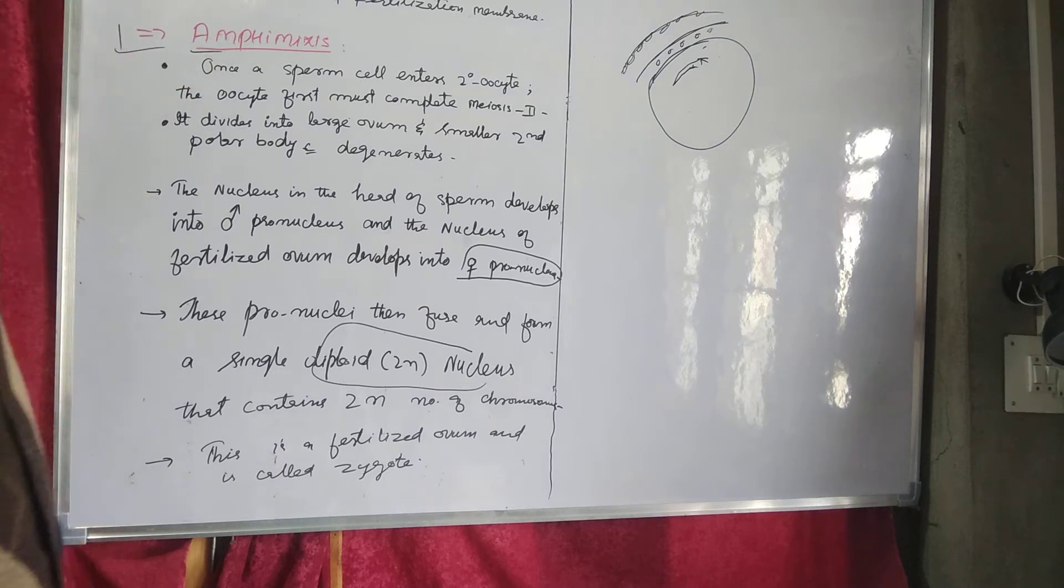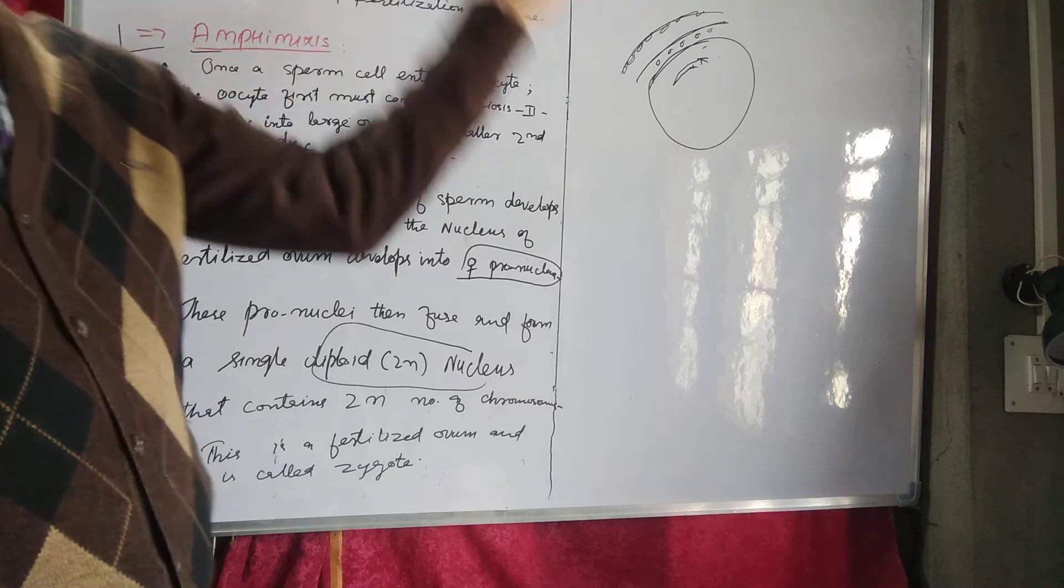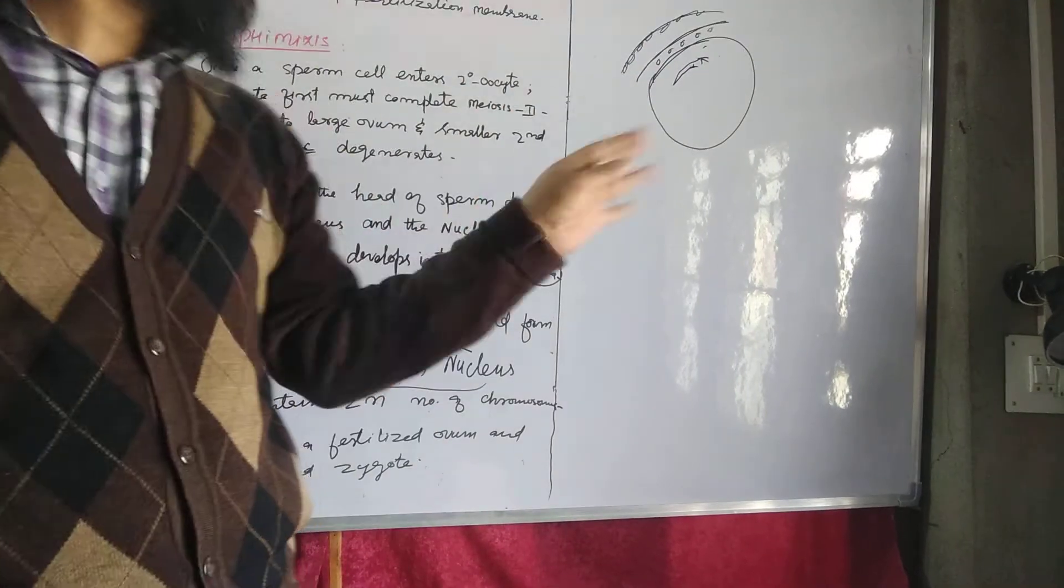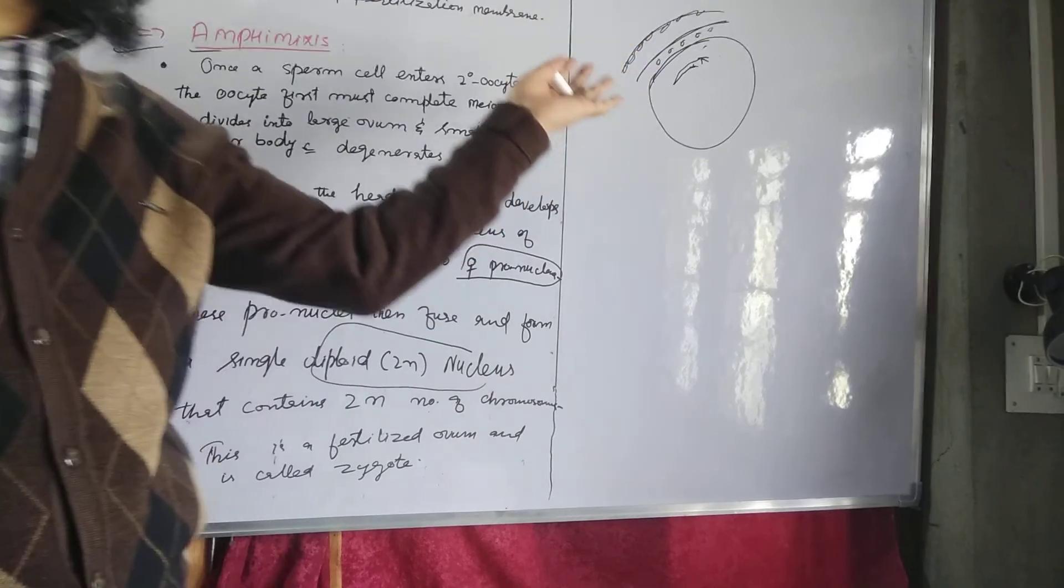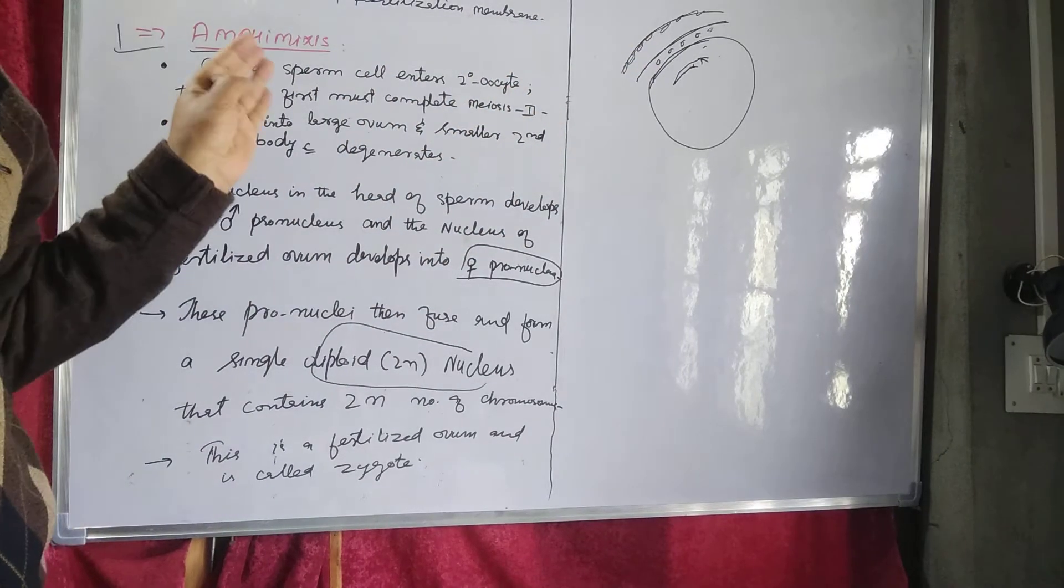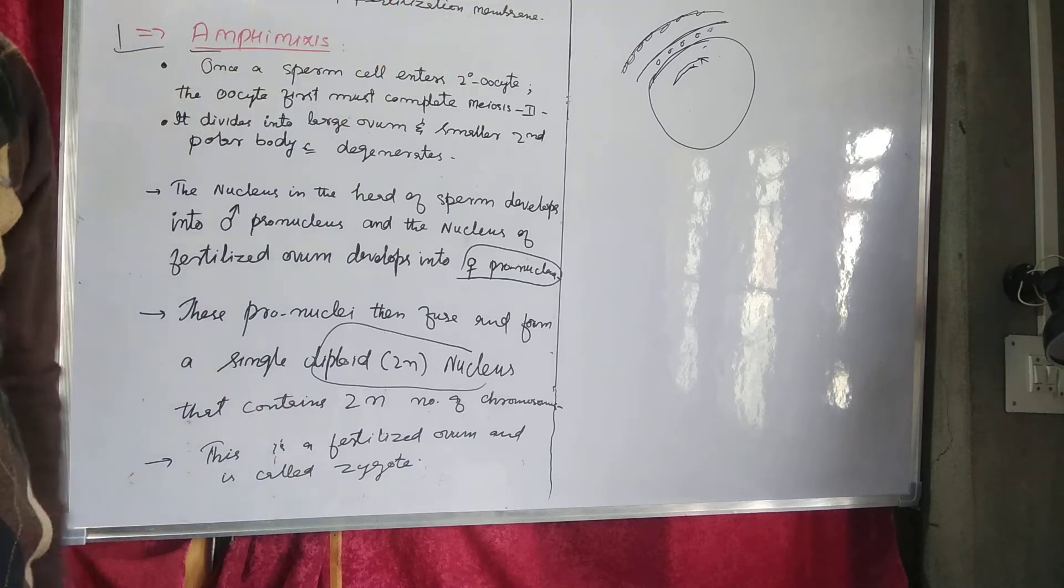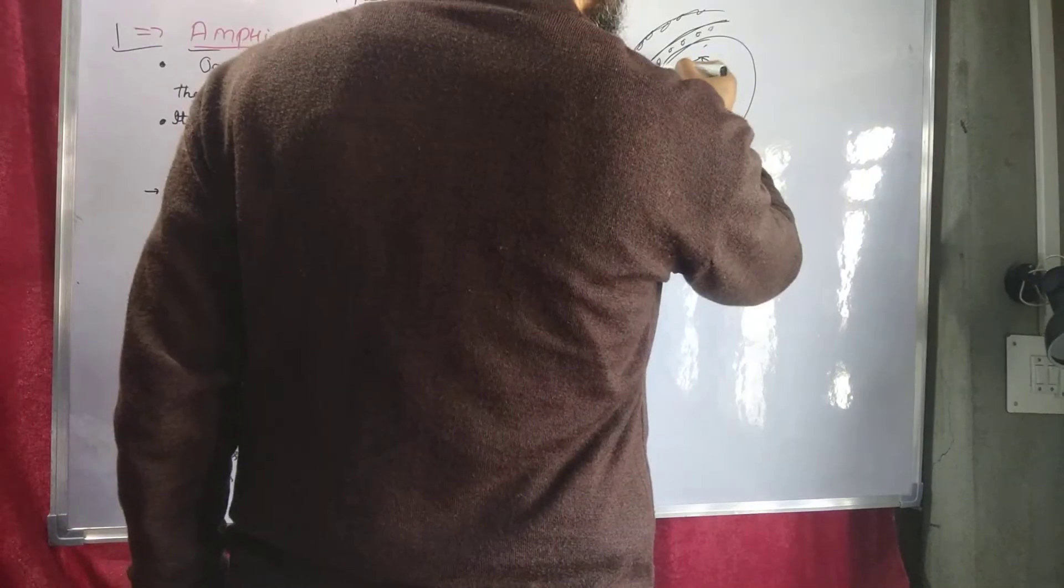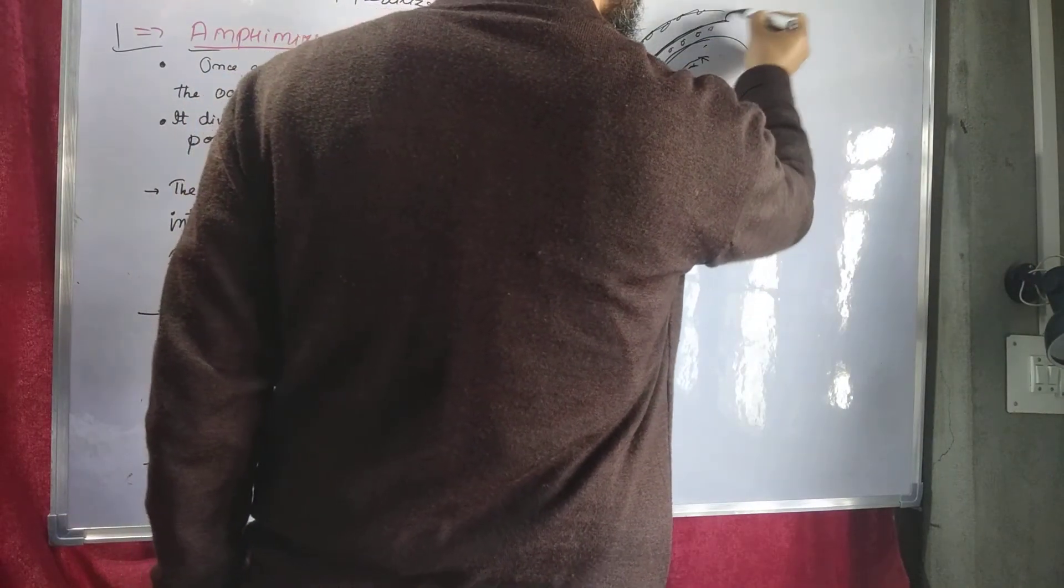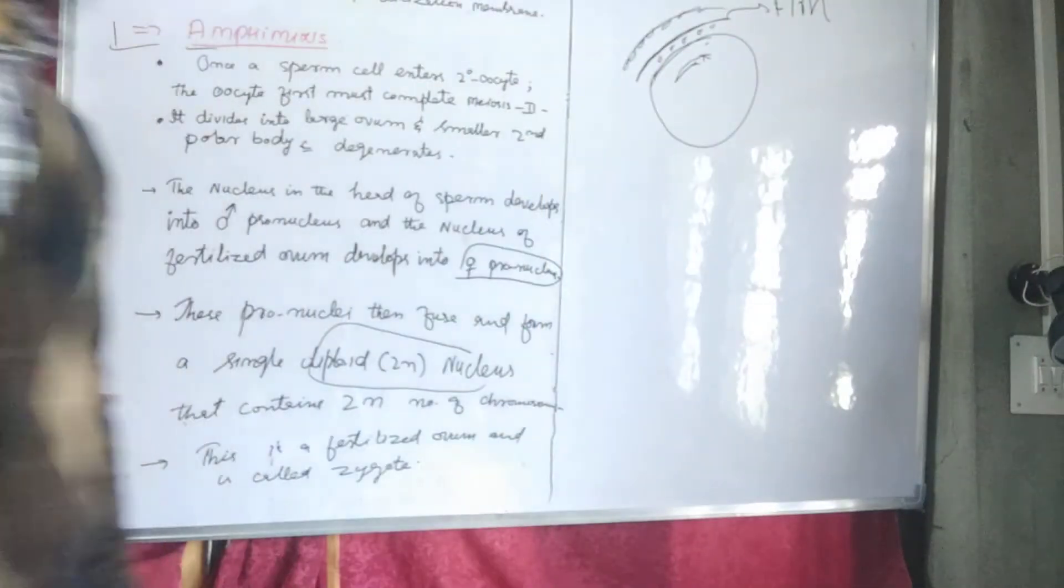Second, we have to learn about zona reaction. Zona reaction will not allow any other sperm to enter into the secondary oocyte. This is called a fertilization membrane. Okay, so we will discuss today's lecture.